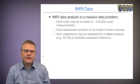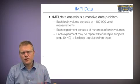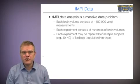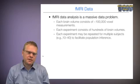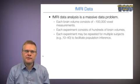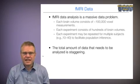So clearly, fMRI data analysis is a massive data problem. Each brain volume that we're studying consists of roughly 100,000 different voxel measurements. Each experiment might consist of 100 brain volumes, and each experiment might be repeated for multiple subjects, maybe say 10, 20, 30, or 40 subjects, in order to facilitate population inference. At the end of the day, the total amount of data that needs to be analyzed is staggering.